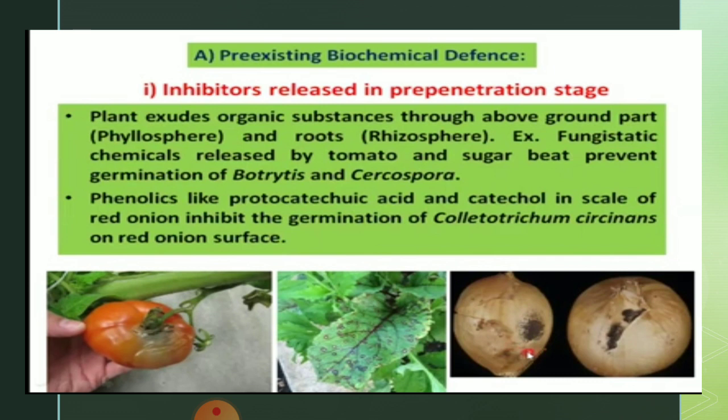Phenolics like protocatechuic acid and catechol present in the scales of red onions inhibit the germination of Colletotrichum coccodes on the red onion surface.